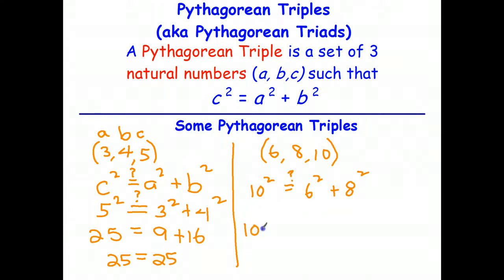Well 10 squared is 100. 6 squared is 36. 8 squared is 64. 100 equals 100. Yes, in fact I should have ticked that one as well. And therefore 6, 8, 10 is also a Pythagorean triple.